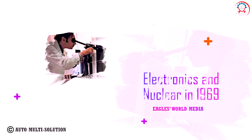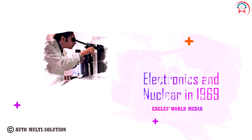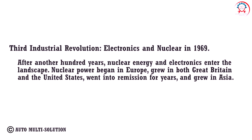Third industrial revolution — electronics and nuclear, 1969: After another hundred years, nuclear energy and electronics entered the landscape. Nuclear power began in Europe, grew in both Great Britain and the United States, went into remission for years, and then grew in Asia.